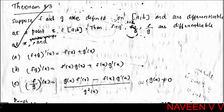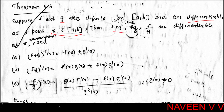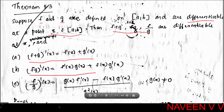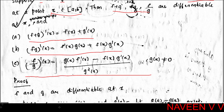Theorem 5.3: Suppose f and g are defined on closed interval [a,b] and are differentiable at a point x in [a,b]. Then f+g, f·g, and f/g are differentiable at x. First: (f+g)'(x) = f'(x) + g'(x). Second: (f·g)'(x) = f'(x)·g(x) + f(x)·g'(x). Third: (f/g)'(x) = [g(x)·f'(x) - f(x)·g'(x)] / g(x)², provided g(x) ≠ 0.